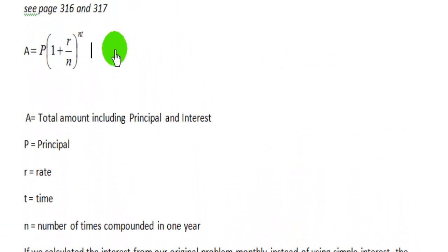The formula for compound interest is the total amount equals principal times one plus r, which is the rate, the percentage rate, divided by n, which is the number of times compounded in one year. And before you multiply it by P, you're going to take what's inside the parentheses and raise it to the n times t power. Again, n is the number of times compounded in one year, and t is the time in years.